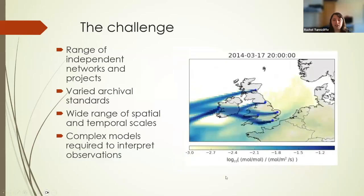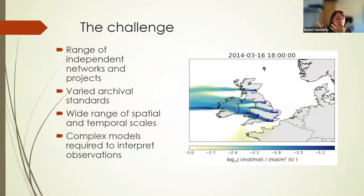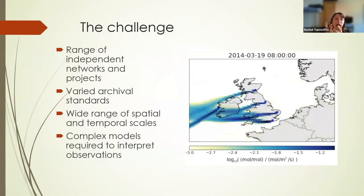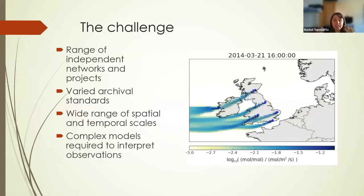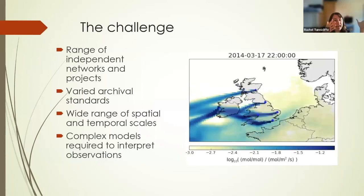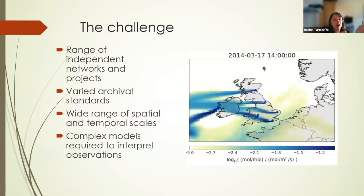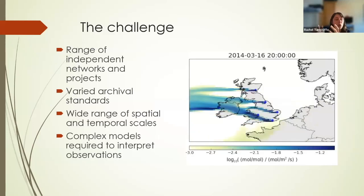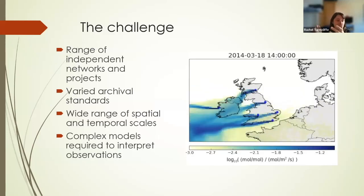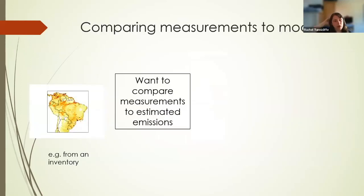In order to interpret this information and derive top-down estimates, we run atmospheric transport models. What I'm showing here is an air history map — it shows where the air came from in order to be measured at our sites, shown as blue points. This runs backwards in time, telling us where that air traveled from, because that tells us what we're emitting. If we know emissions, we can work on mitigation.